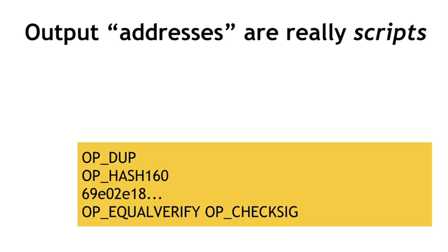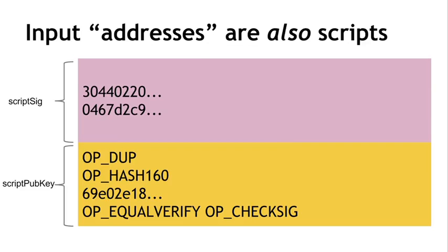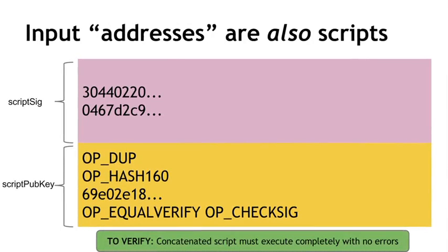The secret is that the input address is also a script — a bit of script that you combine with the output address. You simply concatenate them and that gets you one script that has to run successfully in order to claim a bitcoin. Traditionally these two scripts are called script-sig and script-pub-key, because in the simplest case the output script just specifies a public key and the input script specifies a signature with that public key. When a transaction is being validated, the two scripts get pasted together, they get run, and if the concatenated script can run without any errors, this is considered a valid transaction.